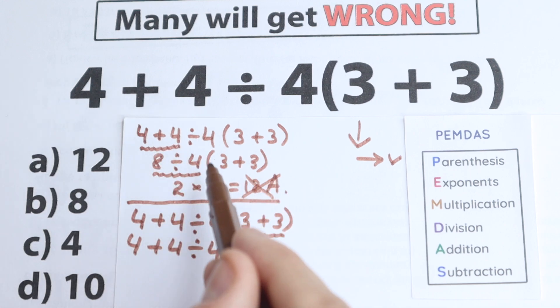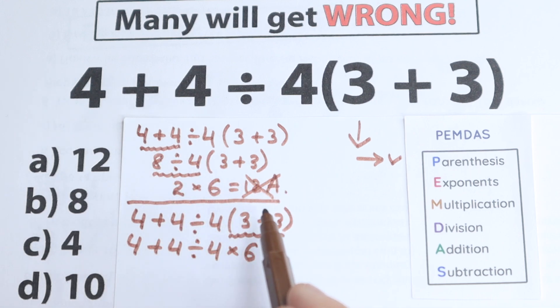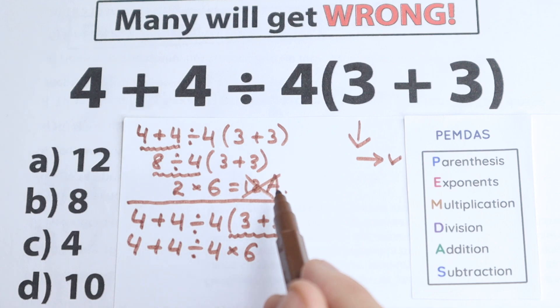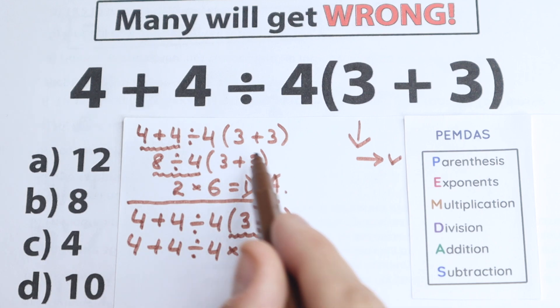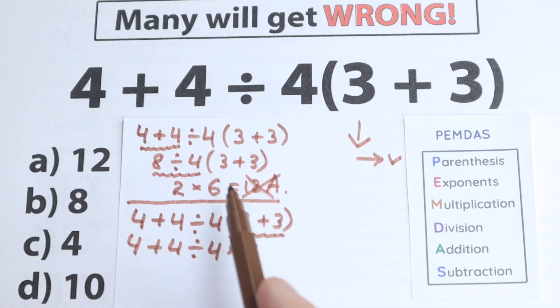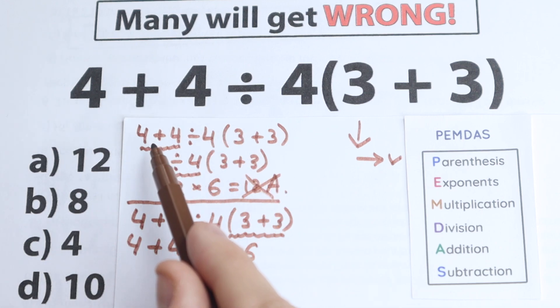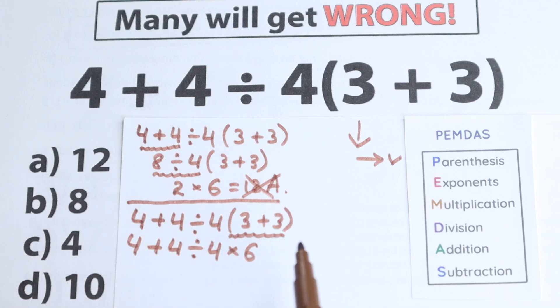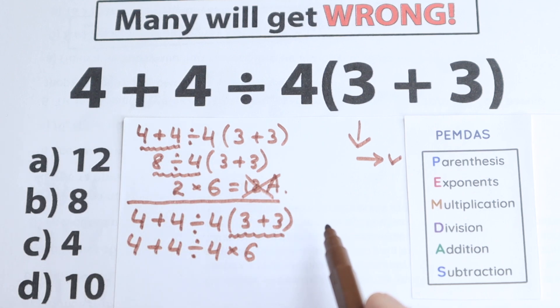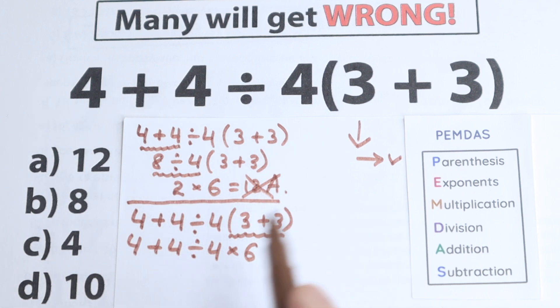I want to show you this wrong solution because many students solve it that way, and I want you to understand it is absolutely wrong. We cannot start from addition and then division — that is a very big mistake, so forget about that solution.